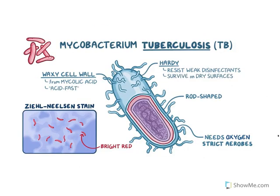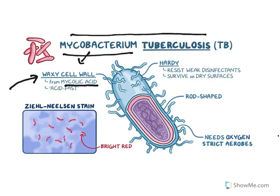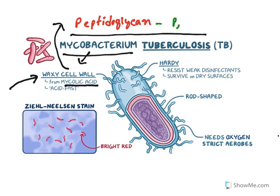TB is caused by Mycobacterium tuberculosis. This organism is different because its cell wall is made up of a waxy coat called mycolic acid. Mycolic acid contains long chain carbons which gives a waxy appearance — hence it is called mycobacterium, where 'myco' means wax in Greek. Usually, gram-positive and gram-negative bacteria cell walls are made up of peptidoglycan, which is affected by beta-lactam antibiotics like penicillin, cephalosporins, monobactam, and carbapenem.